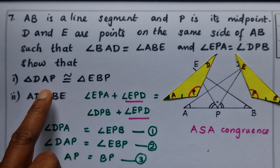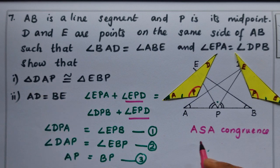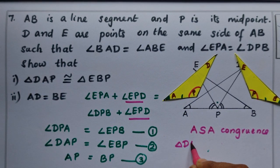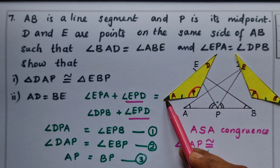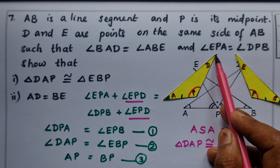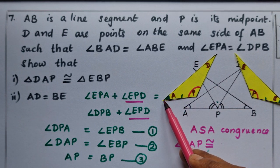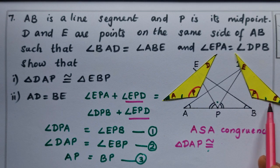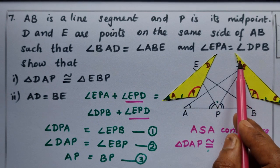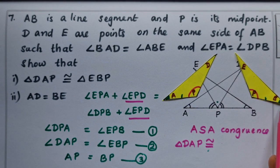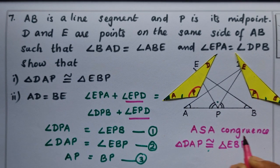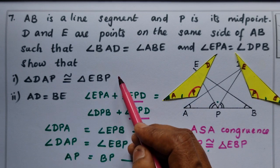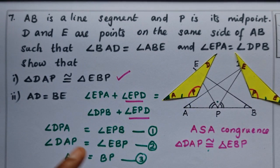Let's see part one. Triangle DAP is congruent to triangle EBP. We apply the congruence rule using the two equal angles and the equal side AP equals BP. That is the proof for part one — triangle DAP is congruent to triangle EBP.